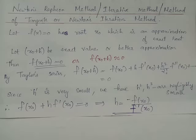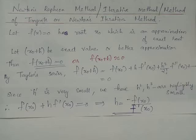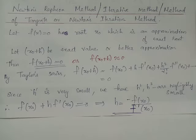We can expand f(x0 + h) using the Taylor series expansion. We have f(x0 + h) = f(x0) + h·f'(x0) + (h²/2!)·f''(x0) + ... Since h is a very small quantity, we can neglect the higher powers h², h³, h⁴, etc.